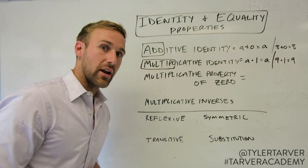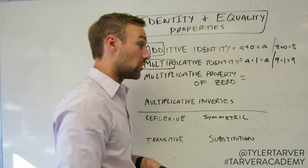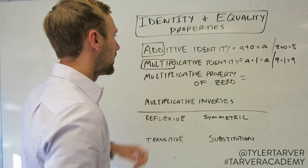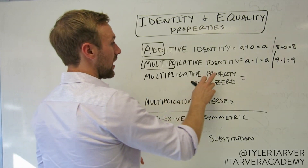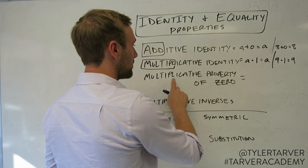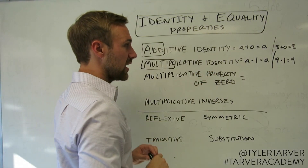Sorry, I was just making sure my camera is on. I didn't want you to miss out on this gold. Okay, next one. We've got the multiplicative property of zero.